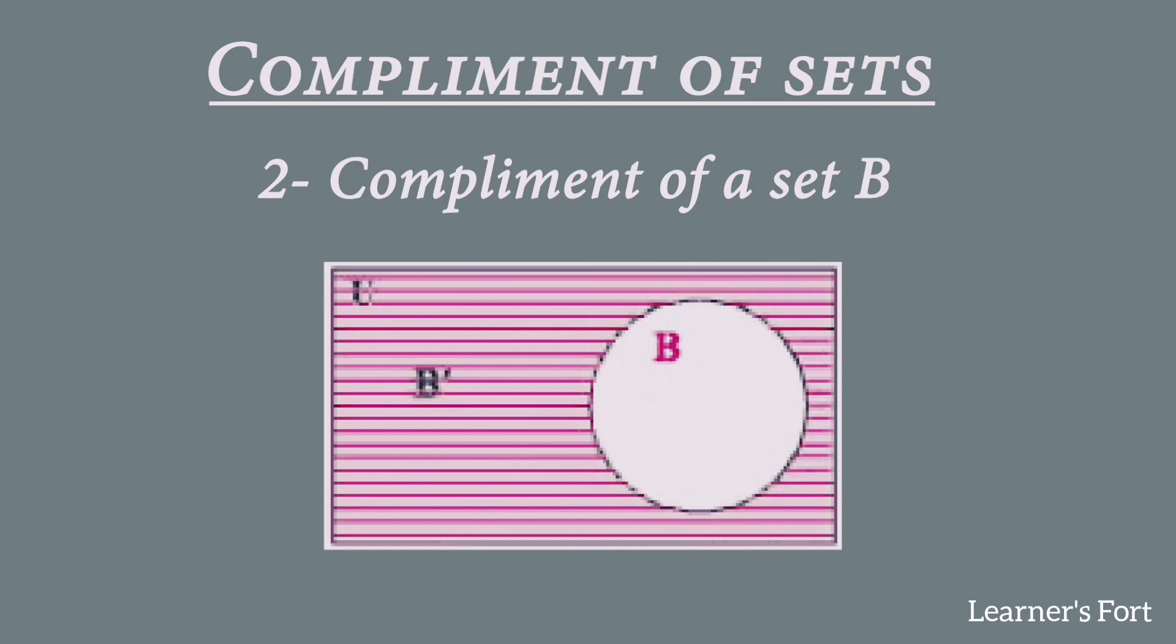When you subtract the elements of set B from the universal set, the remaining elements of universal sets are being shaded in the Venn diagram, which are not part of set B. The complement is kind of an opposite of that set.